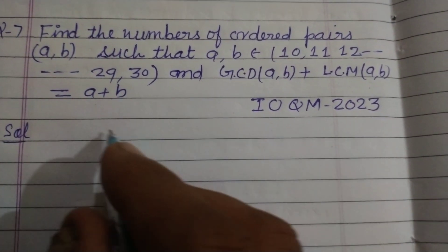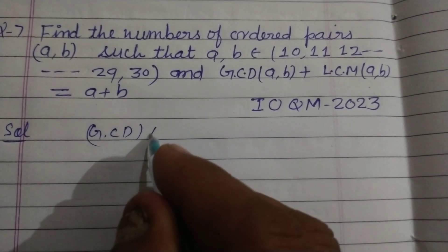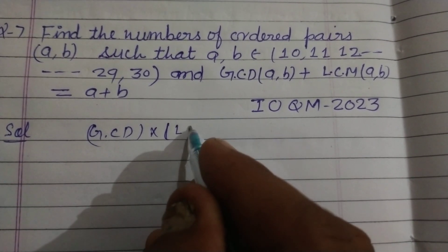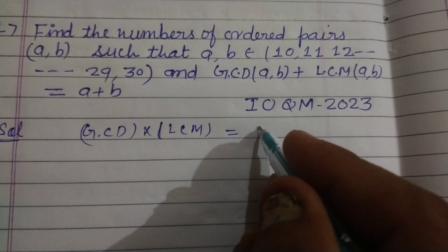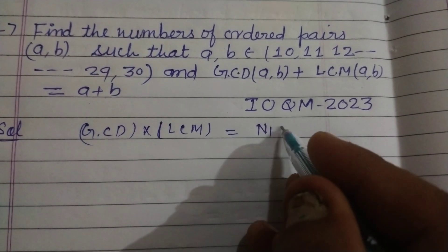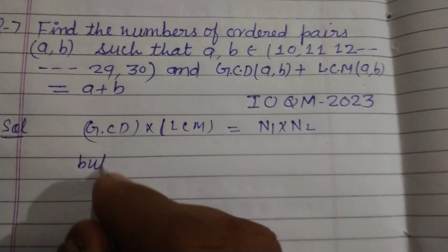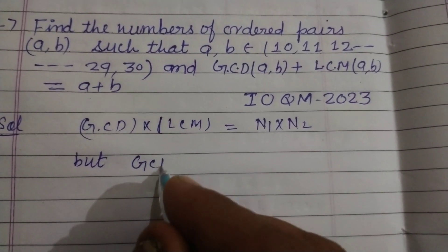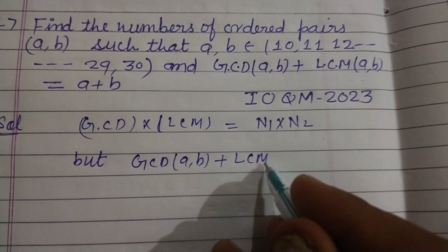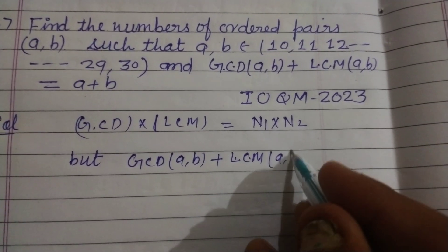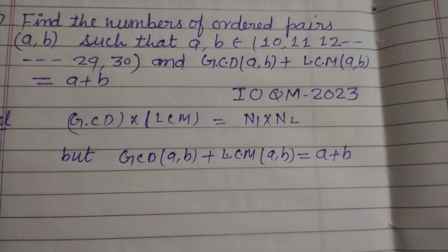Student, you know that GCD of two numbers times LCM of two numbers equals the product of the numbers. So if numbers are N1 and N2, then this holds. But here it is also given that GCD(a,b) + LCM(a,b) equals the sum of the numbers, a + b.